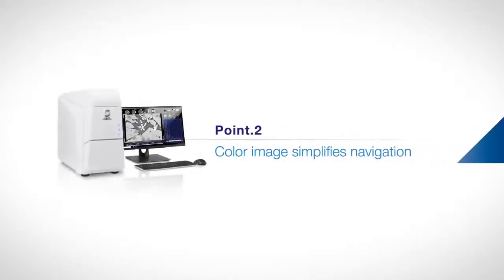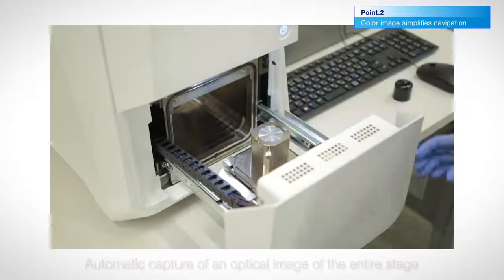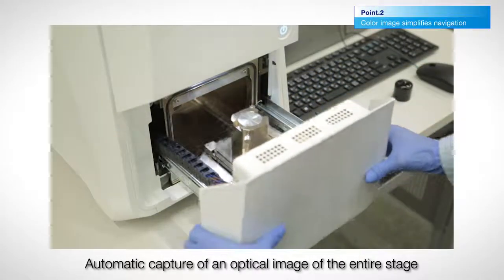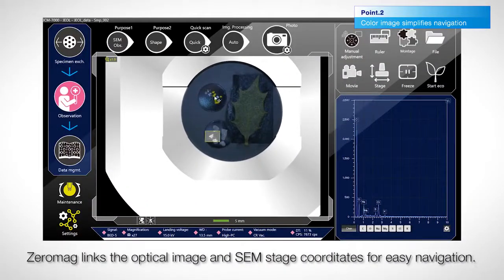The JCM-7000 automatically captures an optical image of the entire stage when a specimen is inserted. This image is used for fast navigation to the area of interest. Our zero mag function links this optical image with the SEM stage coordinates.